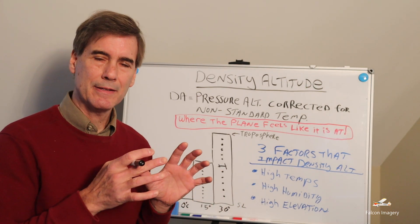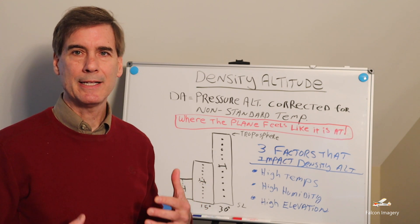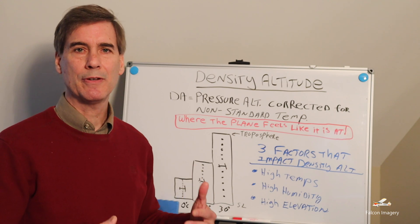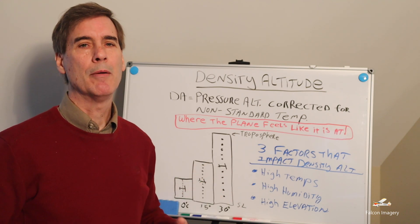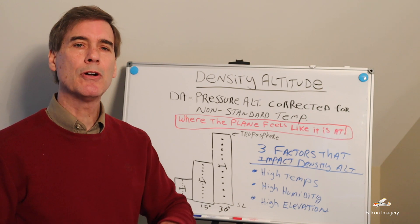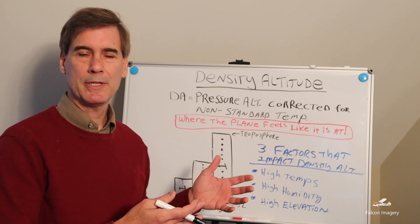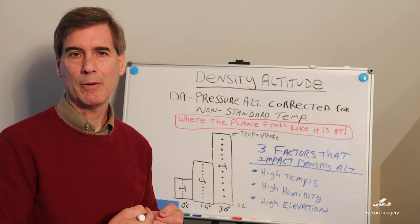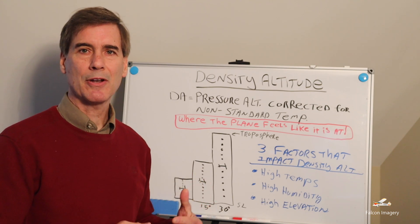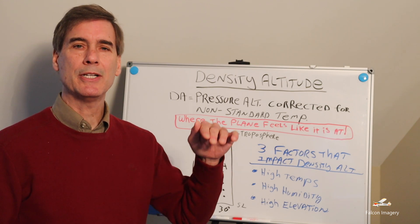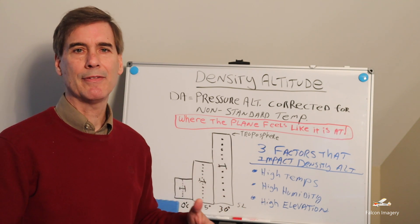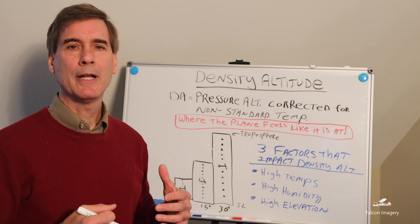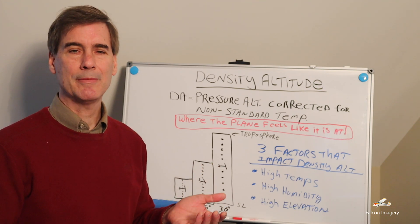It's important to understand that density altitude's major effect is on normally aspirated engines. A turbocharged engine ensures that you have the same density of air as you go up in altitude. But with a normally aspirated engine, as you go up in altitude the air gets thinner, lower density, and as a result there are fewer oxygen and air molecules going into the engine or carburetor. You're going to get less performance as you go up in altitude. In a turbocharged aircraft it's a different story, but in a normally aspirated aircraft it's a major factor in performance as it climbs.